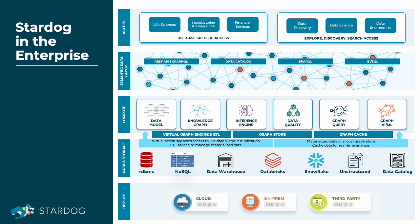Now let's look at how the Stardog platform fits into your existing architecture. Stardog adds a semantic data layer which provides access to all data between sources with virtualization and unifies meaning across these sources through a common data model. At the compute layer, hidden relationships are uncovered with the inference engine, and business logic and data quality rules are evaluated for reporting and analyzing data. The Stardog platform can be deployed based on your enterprise's needs, offering a variety of plans including a managed service through Stardog Cloud, on-prem, or self-hosted by customers in their own VPC or from third-party providers.